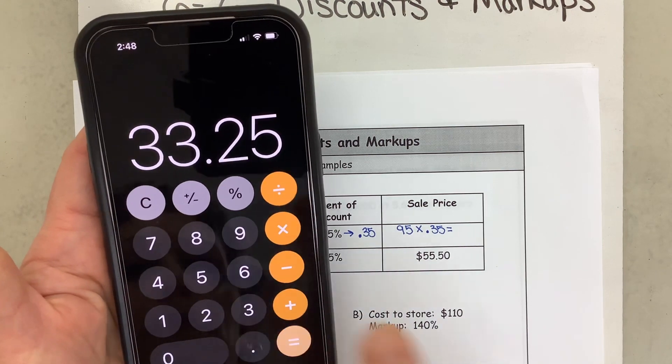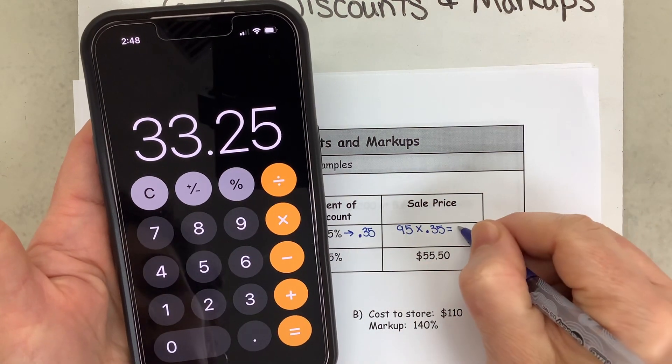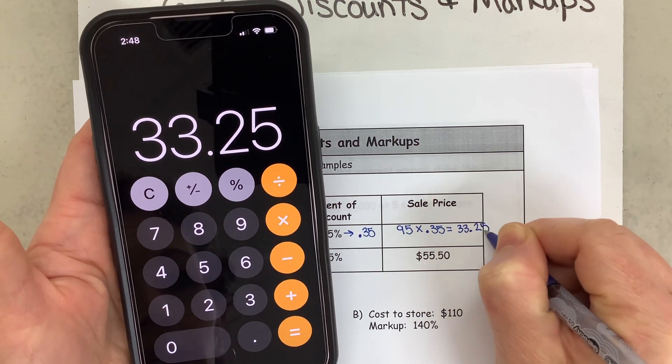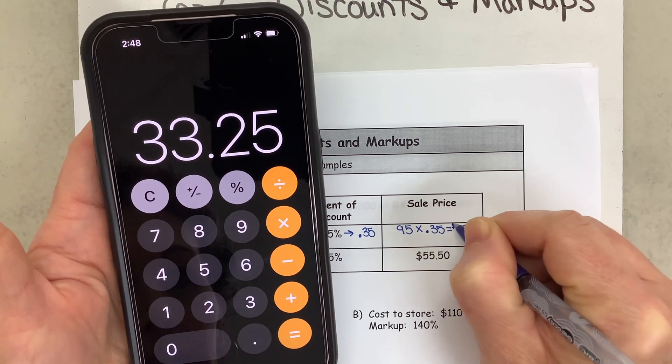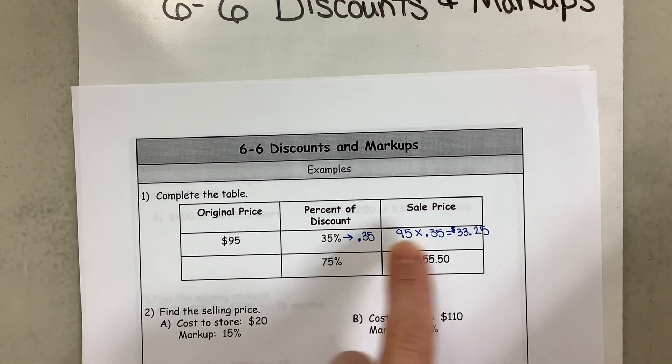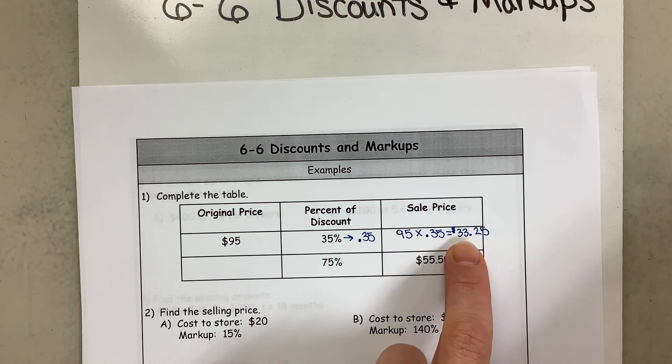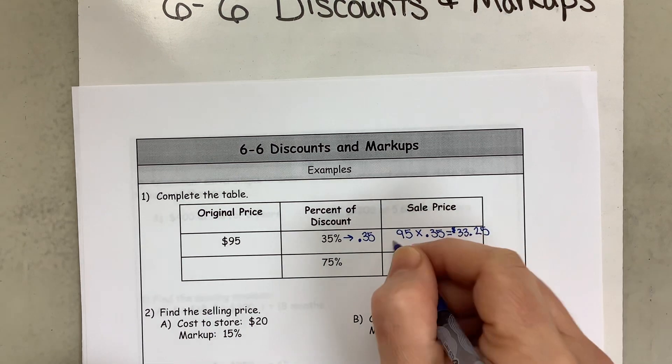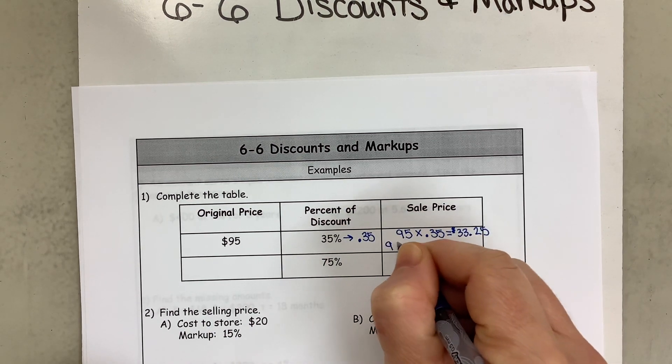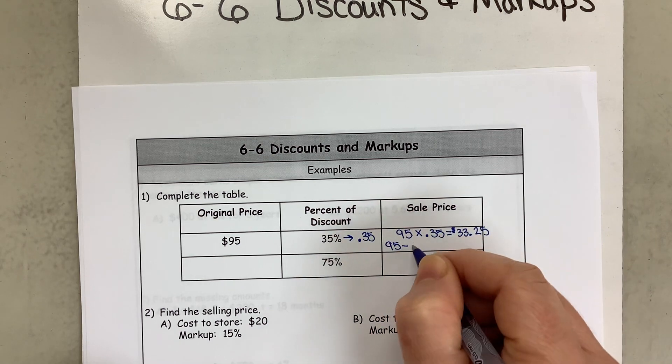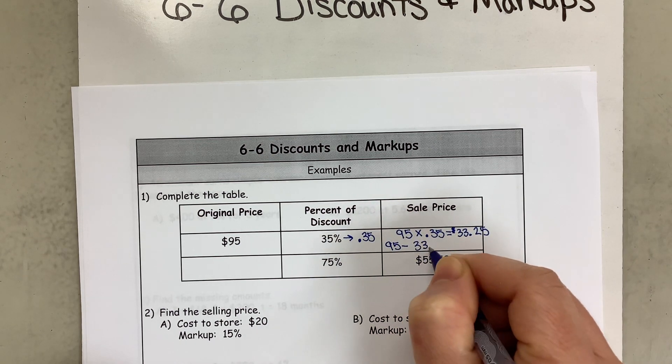Now that gives us, so we're going to pull up our calculators, that's going to give us 95 times 0.35, that is $33.25. Now is that actually the sale price? That is the discount, but is this what we're paying? No, that is not what we're paying.